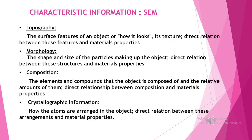Now we can look at the characteristic information of the SEM. First, topography — this deals with the surface features of an object, how it looks, its texture, and the direct relation between these features and material properties. Second, morphology — it deals with the shape and size of particles making up the object, and the direct relation between these structures and material properties. Third, composition — the elements and compounds that the object is composed of and their relative amounts, and their direct relation to material properties. Fourth, crystallographic information — this deals with how the atoms are arranged in the object and the direct relation between these arrangements and material properties.